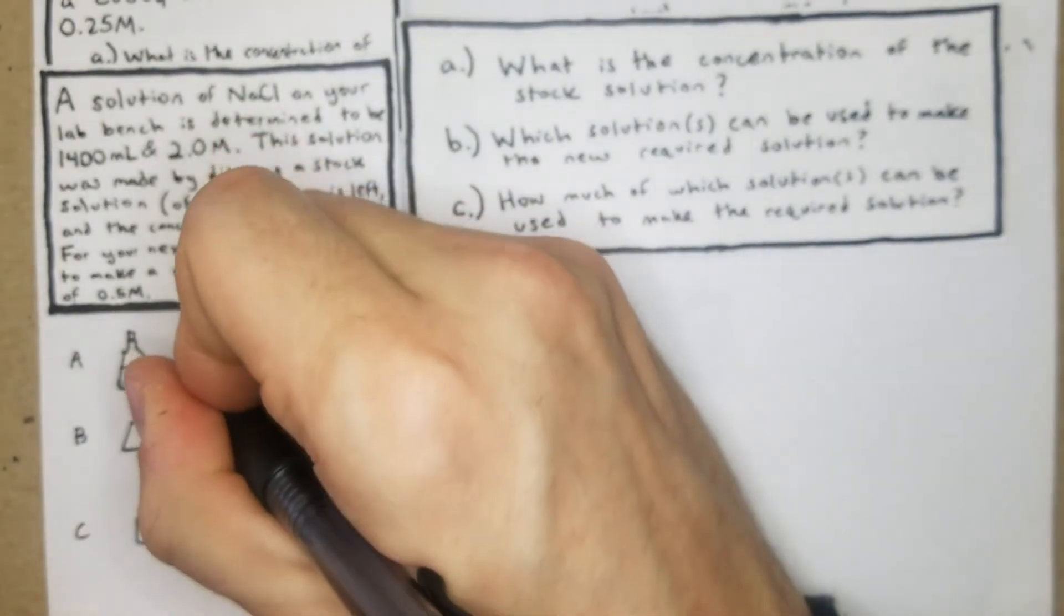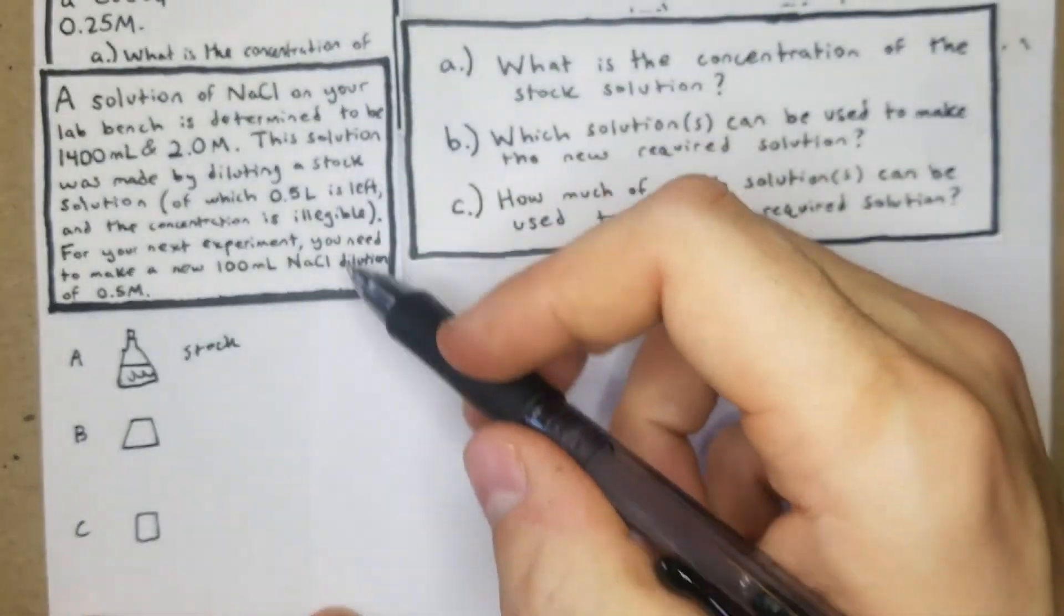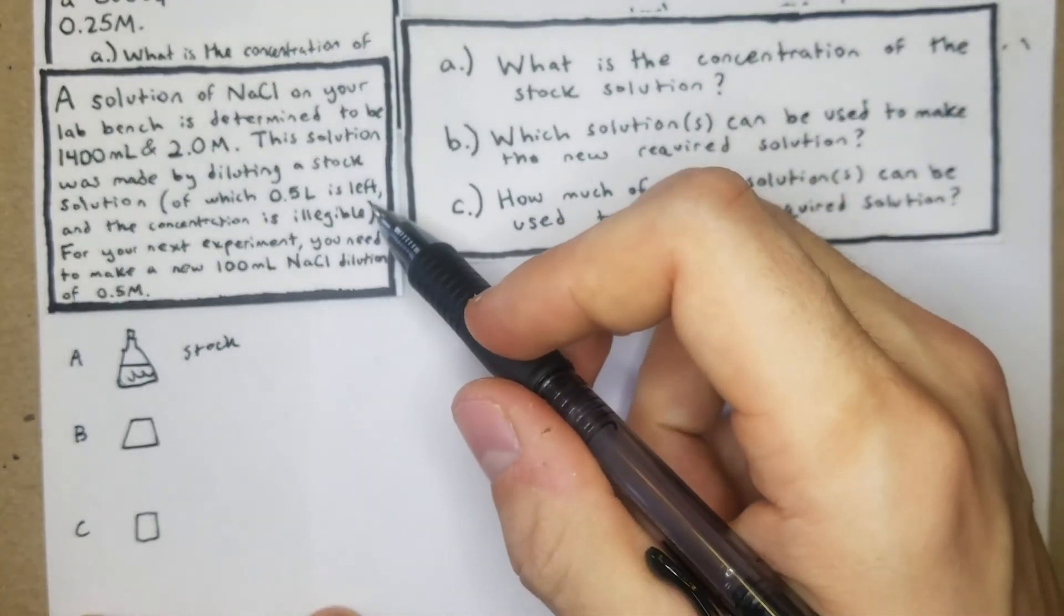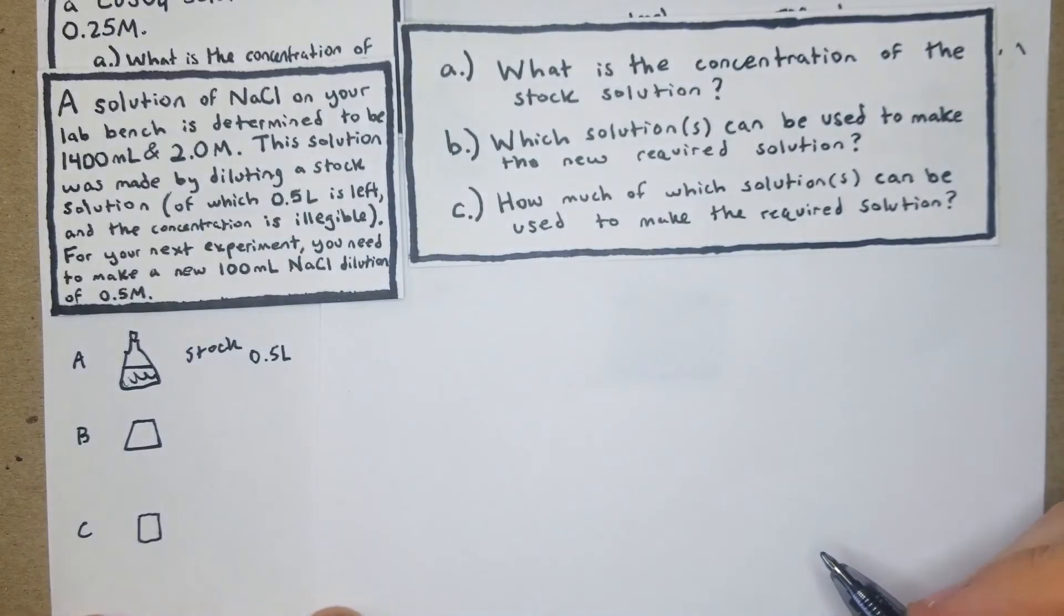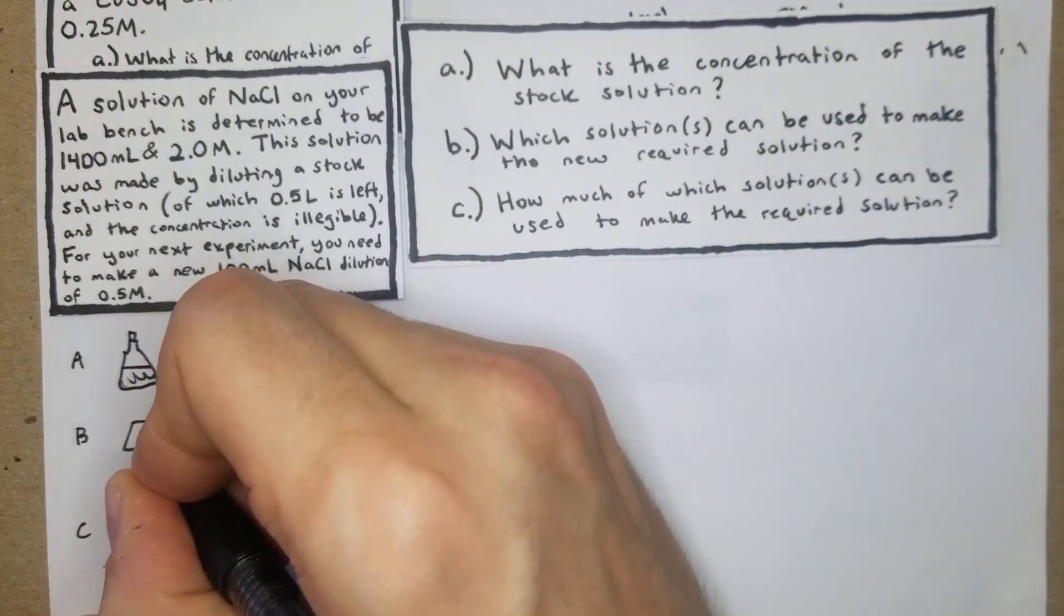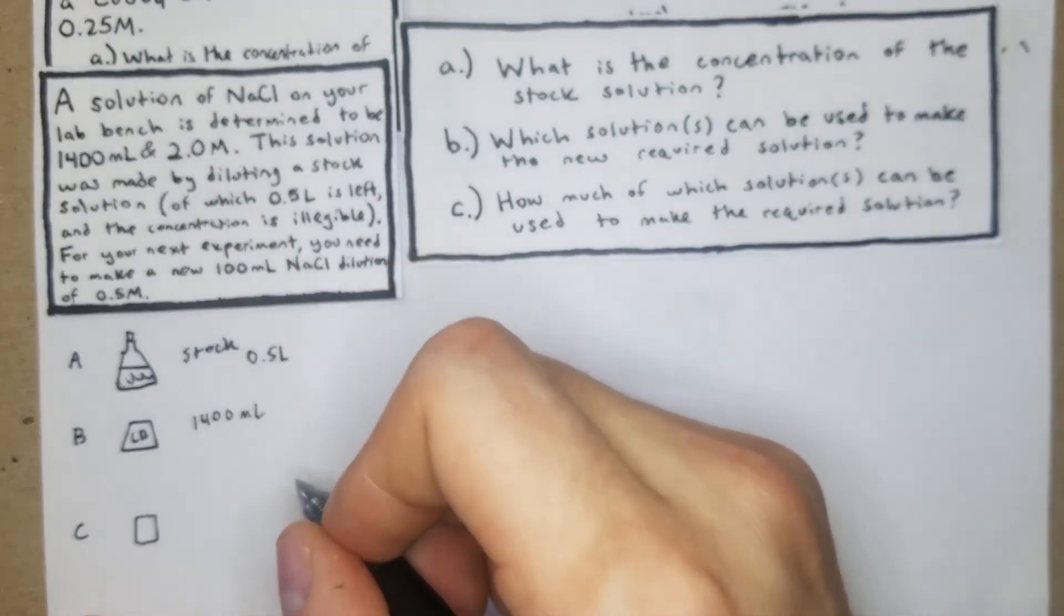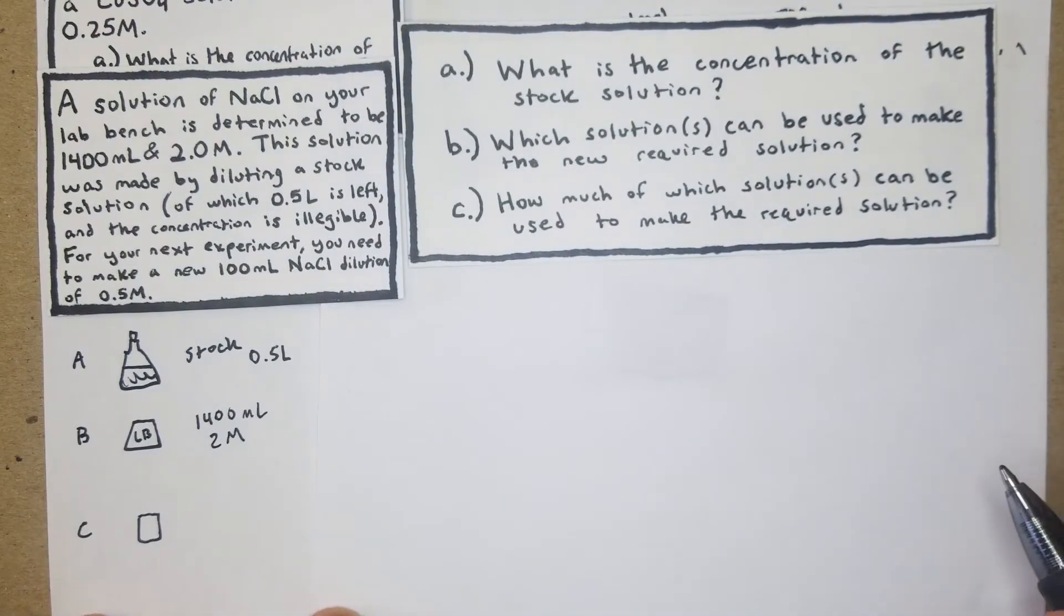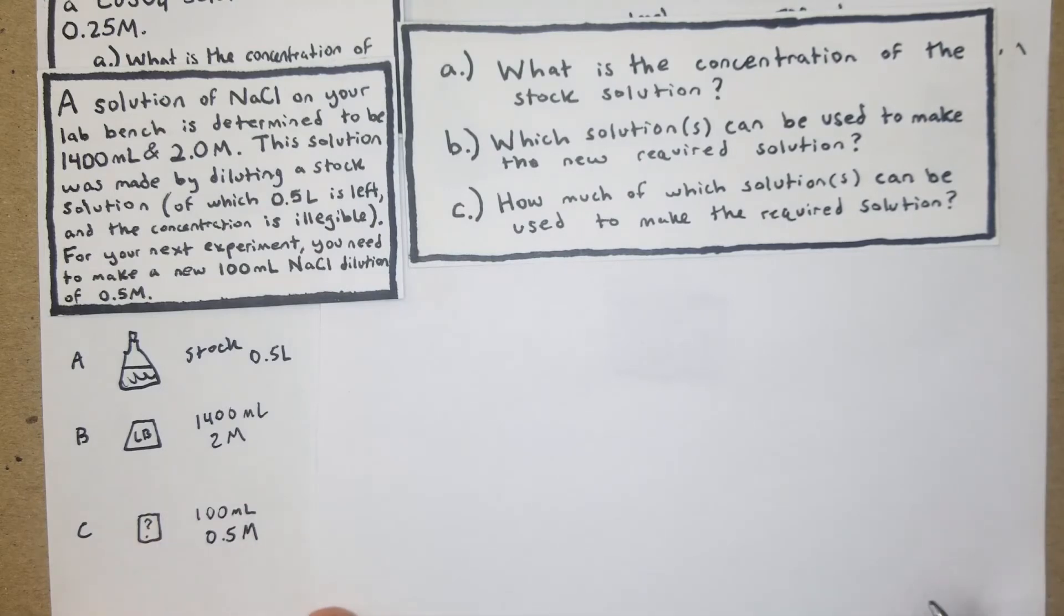So it's a three-part question. First off, what is the concentration of the stock solution? Then which solutions can be used to make the new required solution? And then how much of which solutions can be used to make the required solution? So the word solution is used a ton here, and it might get a little bit confusing. But if you do have a problem like this, and it's worded as possibly poorly as this one is, what I like to do is just make like a small picture. So we have our A, which is our stock. We have 0.5 liters of stock, but we don't know its molarity. Then on our lab bench, we have 1400 mL and 2 molar. And what we're trying to do is we're trying to make 100 mL of 0.5 molarity.